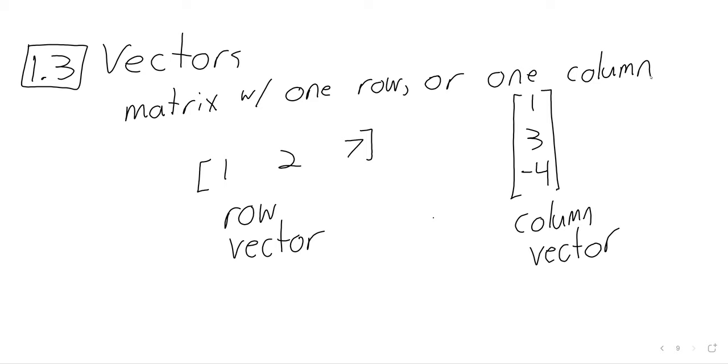The only setting I can think of where row vectors are frequently used are certain types of probability. So just for convenience, from now on when I say vector, I mean a column vector.